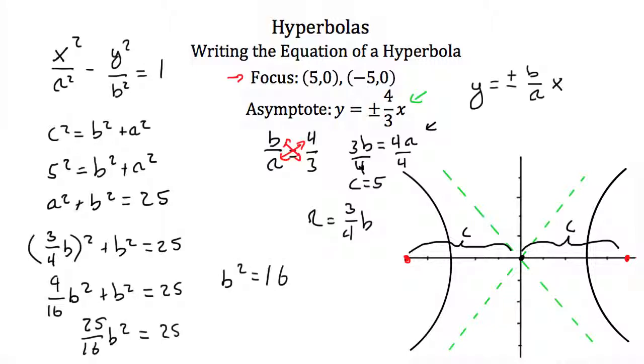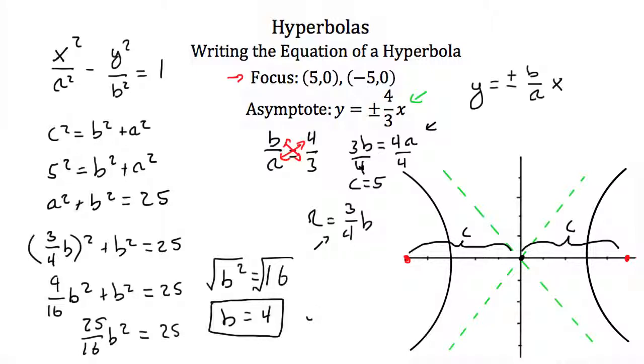Multiplying both sides by the reciprocal 16/25 gives b squared equals 16. Taking the square root gives b equals 4. Plugging back in, we find that a is indeed equal to 3.